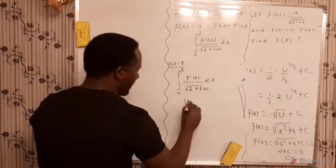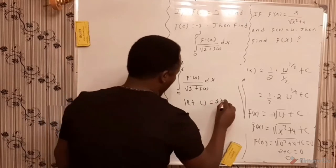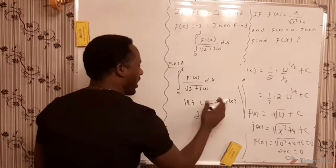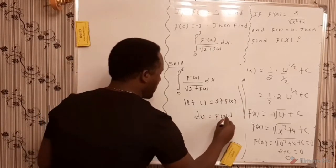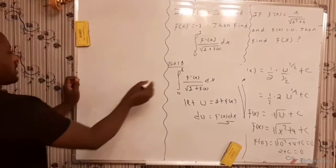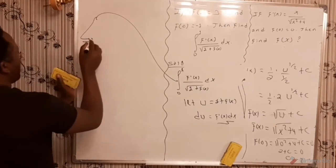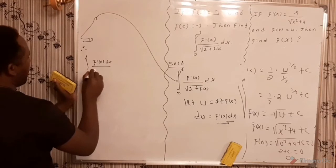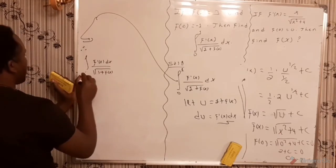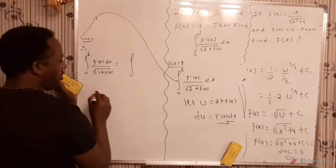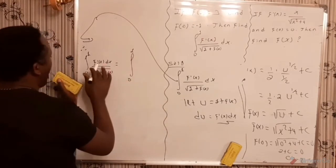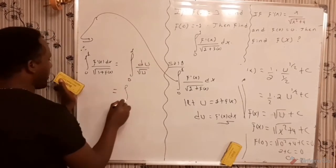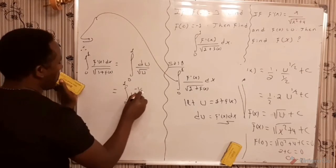To find this integral we apply substitution. Let u equal 1 plus f of x. Then if you find the derivative with respect to x, the derivative of 1 is 0 and the derivative of f of x is f prime of x dx. So du equals f prime of x dx. Therefore the integral of f prime of x dx over the square root of 1 plus f of x, from 0 to 1, is given by the integral of du over the square root of u, which equals the integral of u raised to minus one half du.